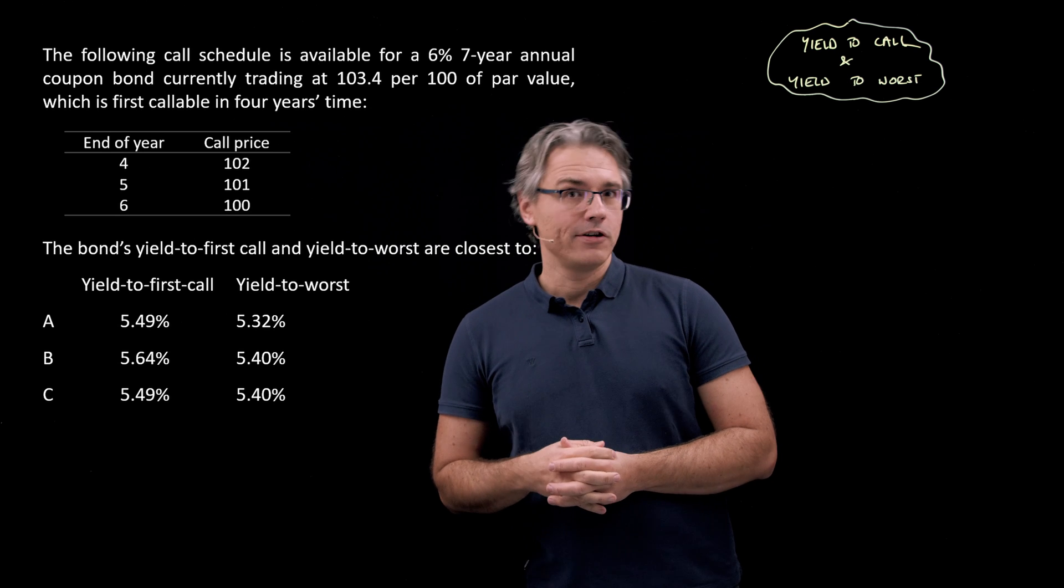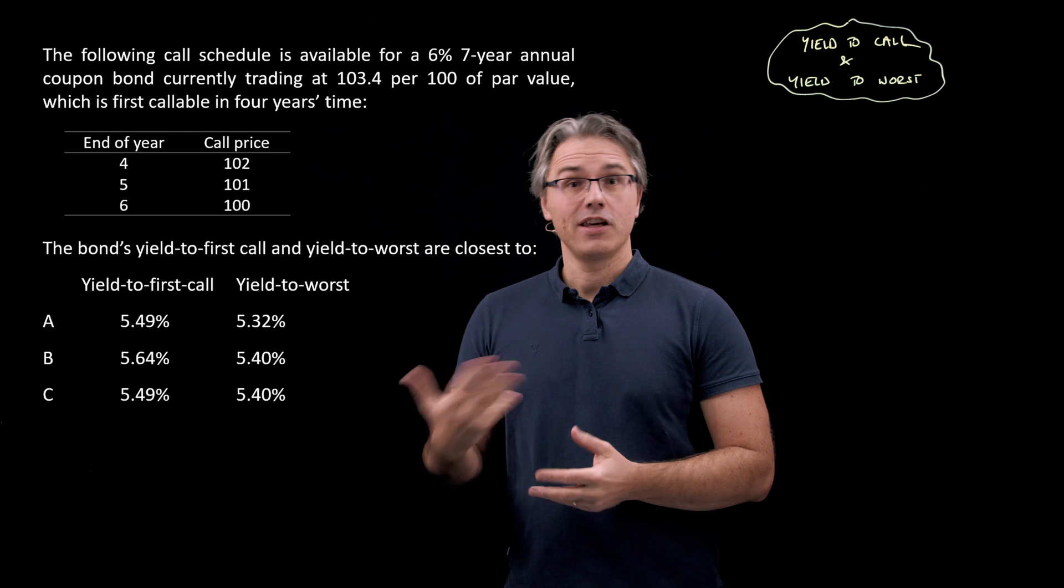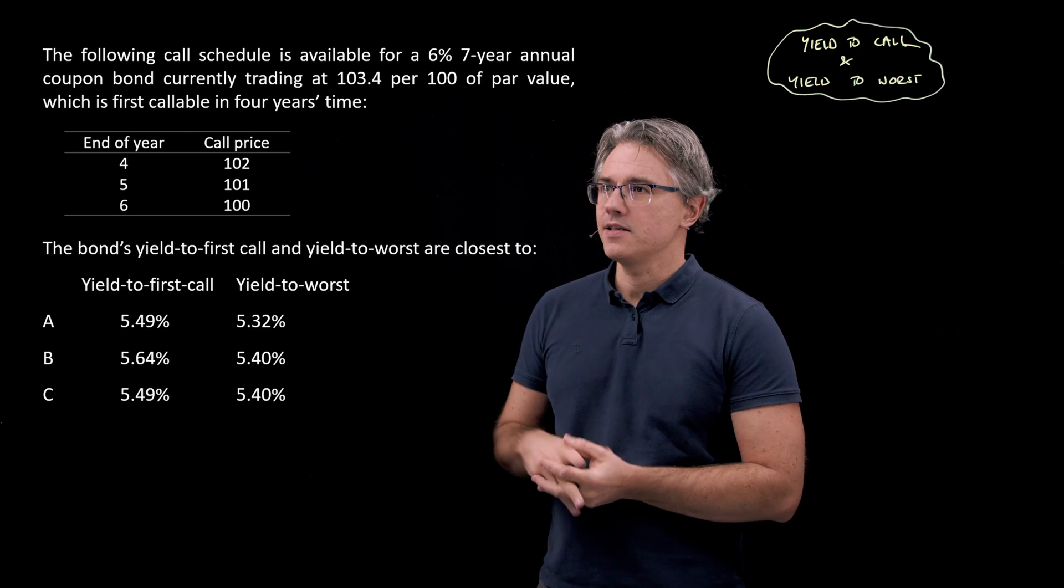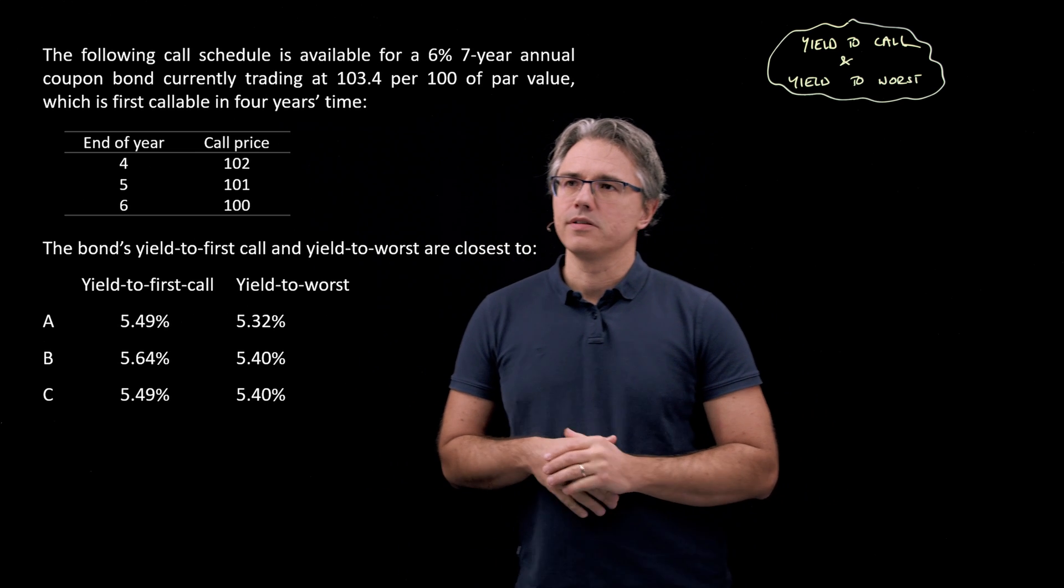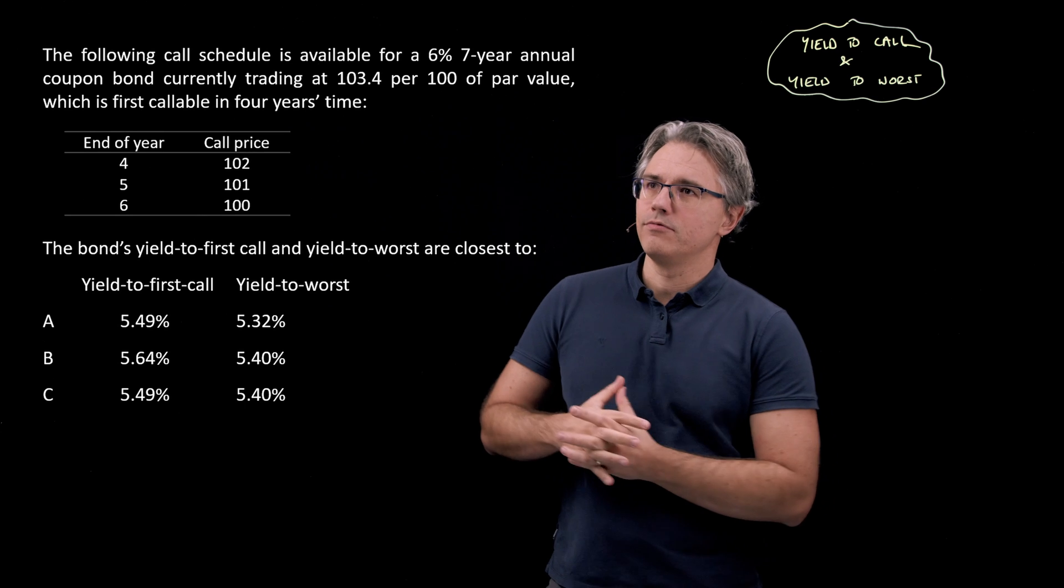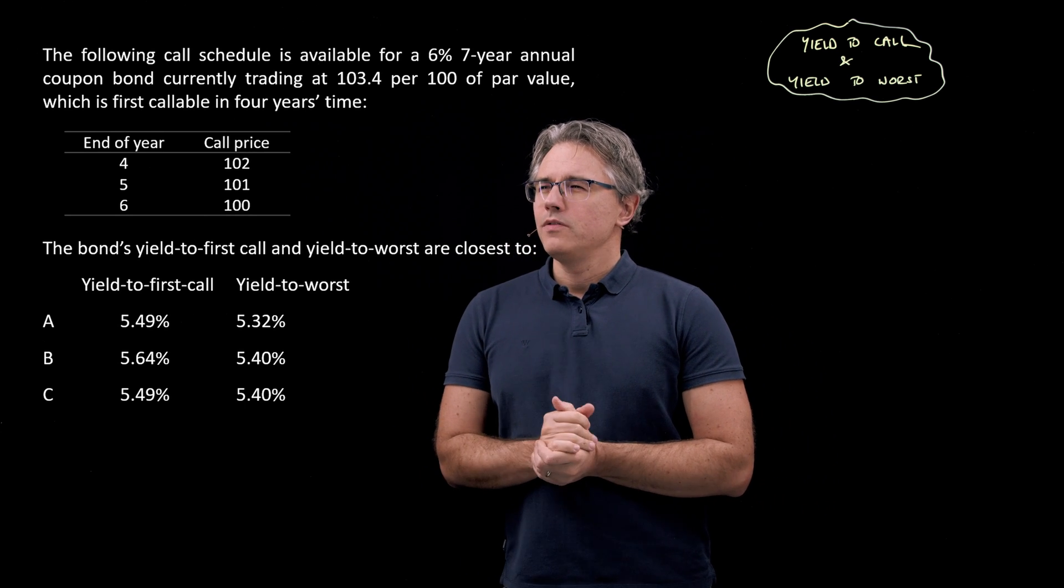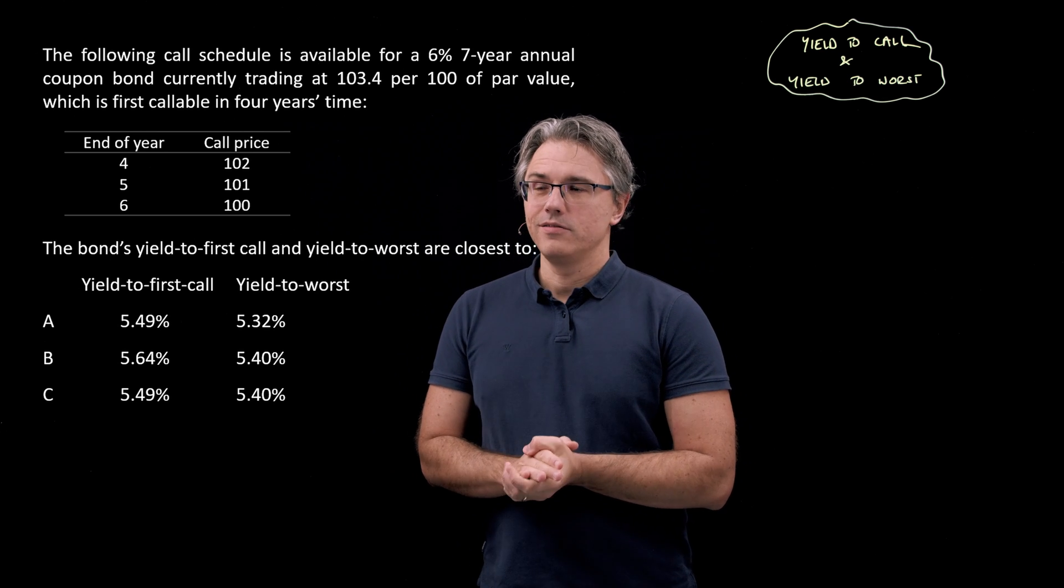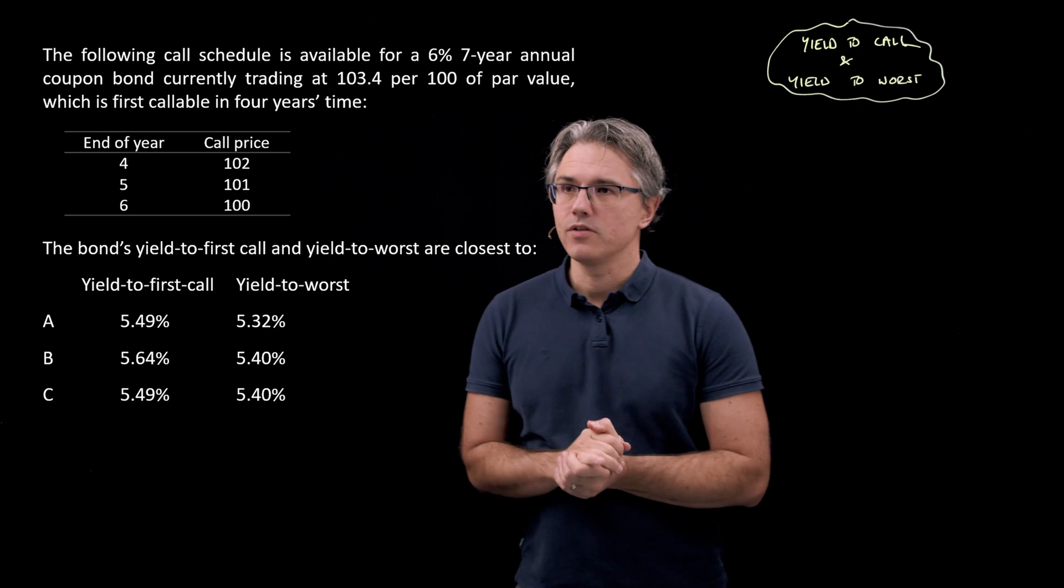Bond holders have no say in that matter. They'll have to give up the bond and receive whatever is the call price. In this case, as you can see, it's a declining call price depending on when the bond is called. It gets closer and closer to 100, the par value of the instrument. Now the bond's yield to first call and the yield to worst are closest to—and we've got options for both concepts.